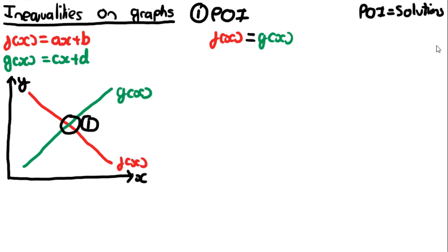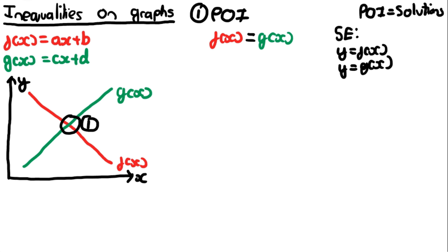Another way of saying this: it is the solution to the simultaneous equations y = f(x) and y = g(x). So that is the point of intersection defined, and we're going to call this point 'e', because we've already used a, b, c, and d in the functions.